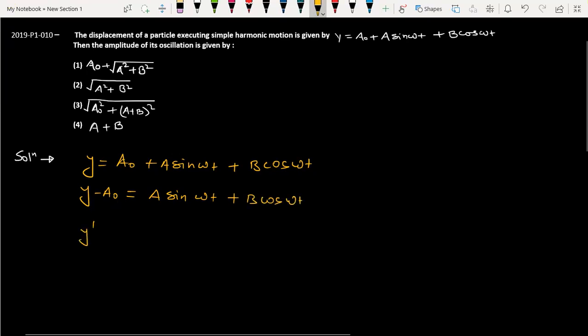We can say this is y prime. Now this y prime is the combination of two waves, so this is y₁ plus y₂. We have taken y₁ is equal to a sin ωt and y₂ is equal to b cos ωt.